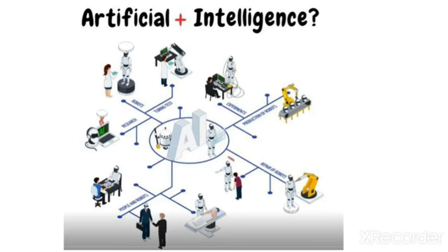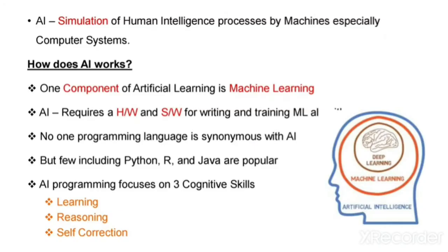When we combine these two terms together, AI is a broad area of computer science that makes machines seem like they have human intelligence. The main goal of AI is to mimic human intelligence, creating systems that can function intelligently and independently. So, AI is a simulation of human intelligence.